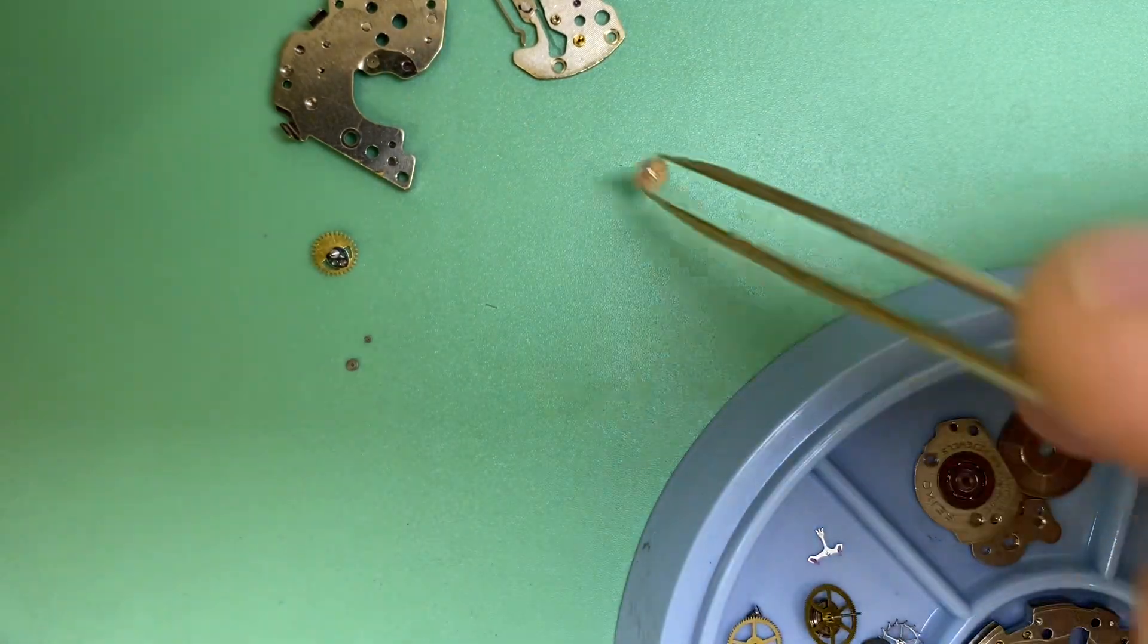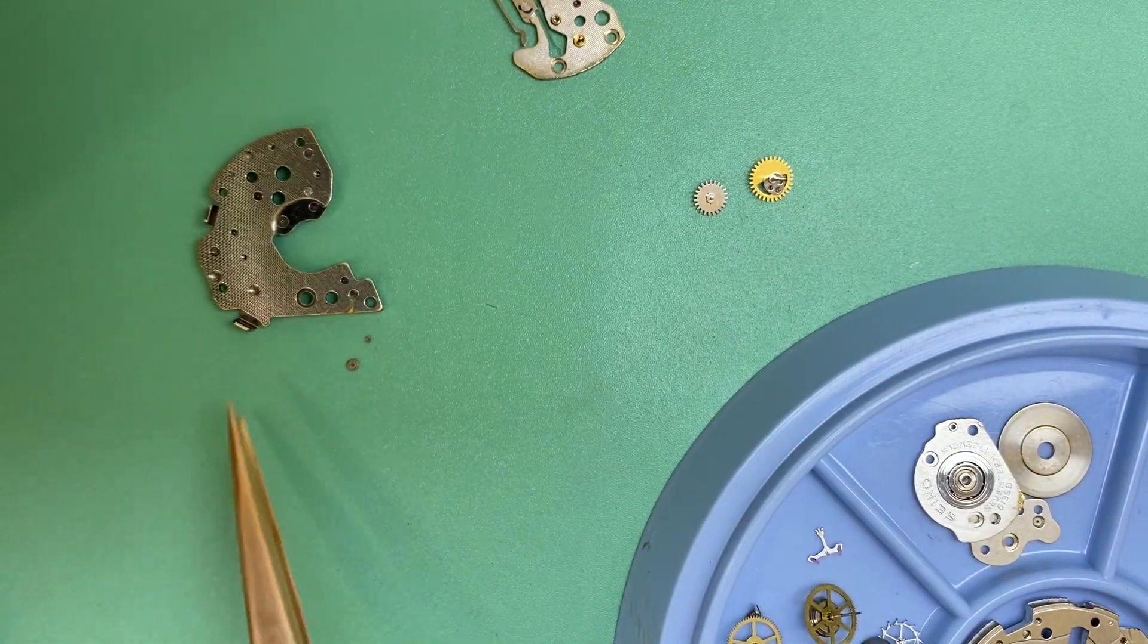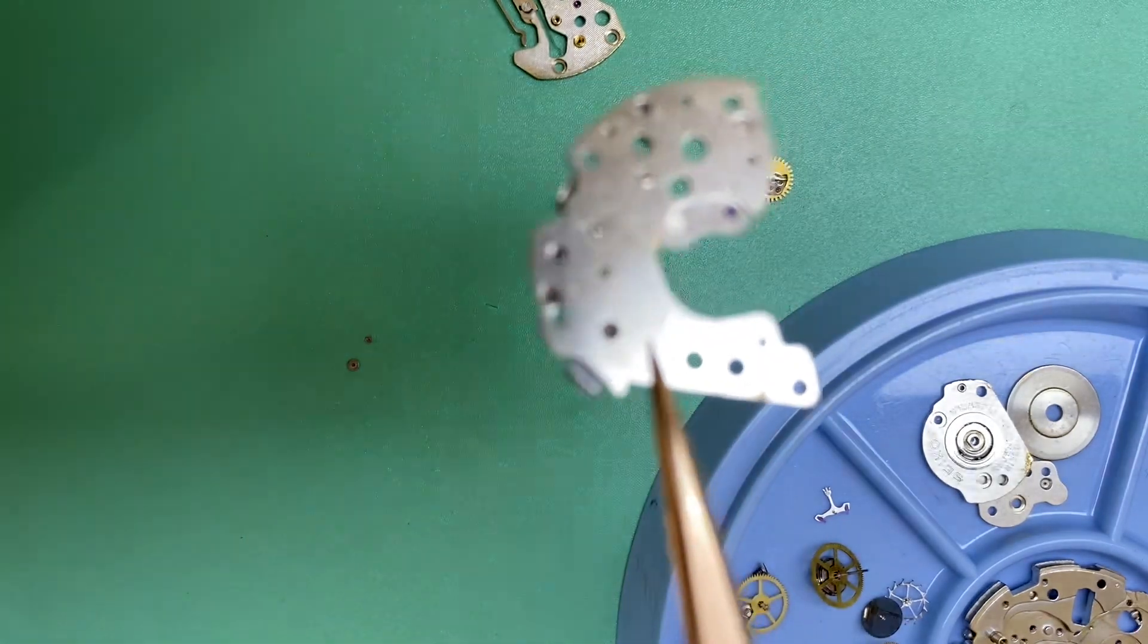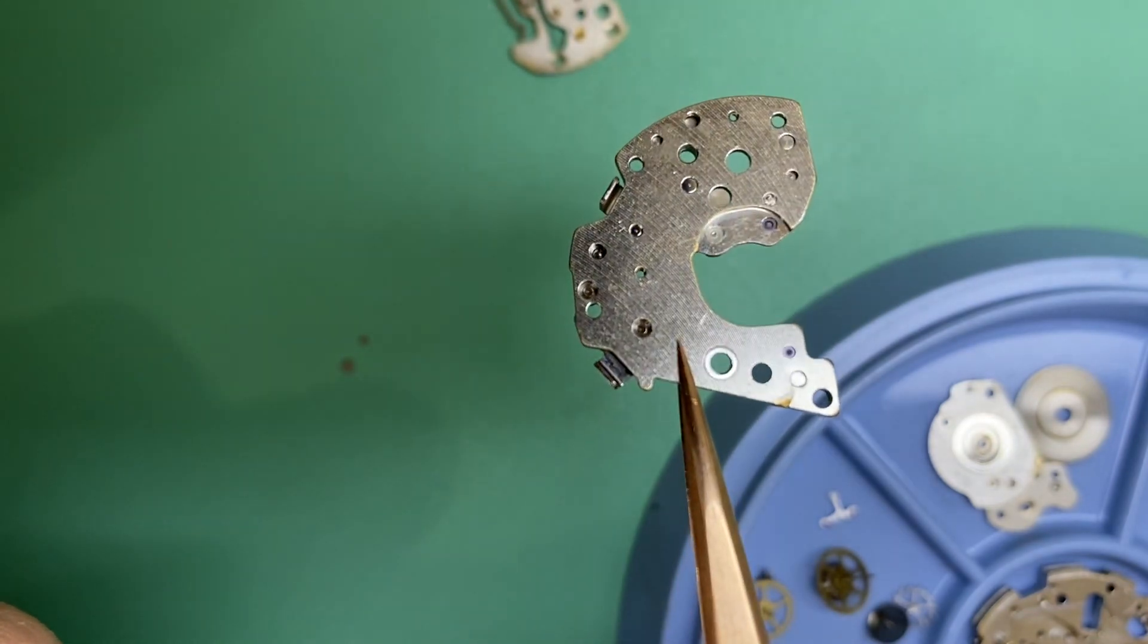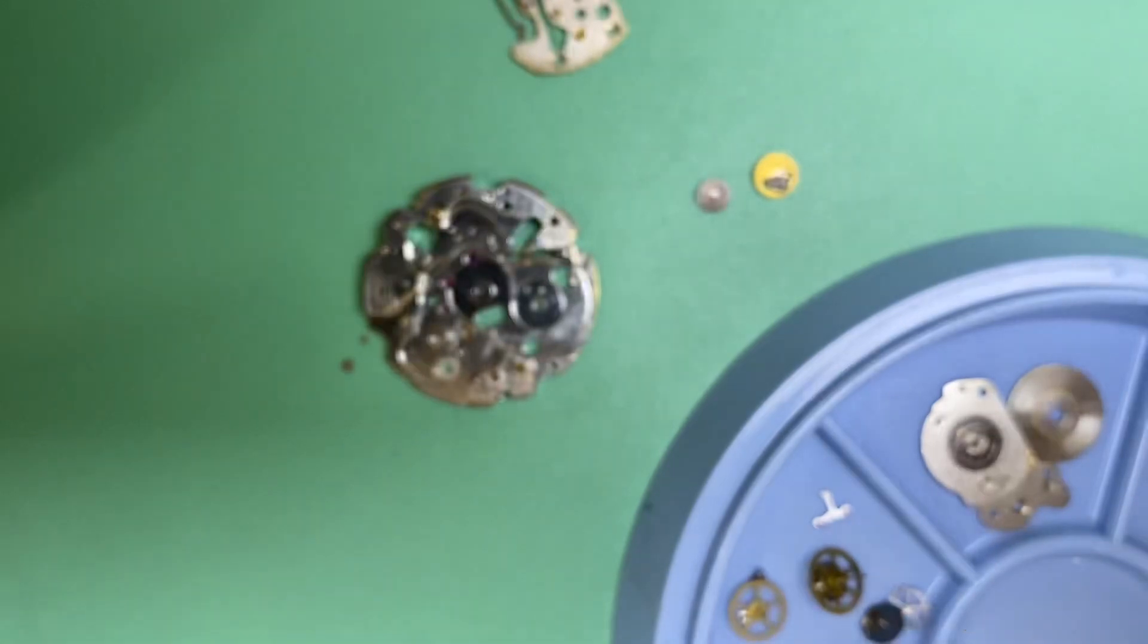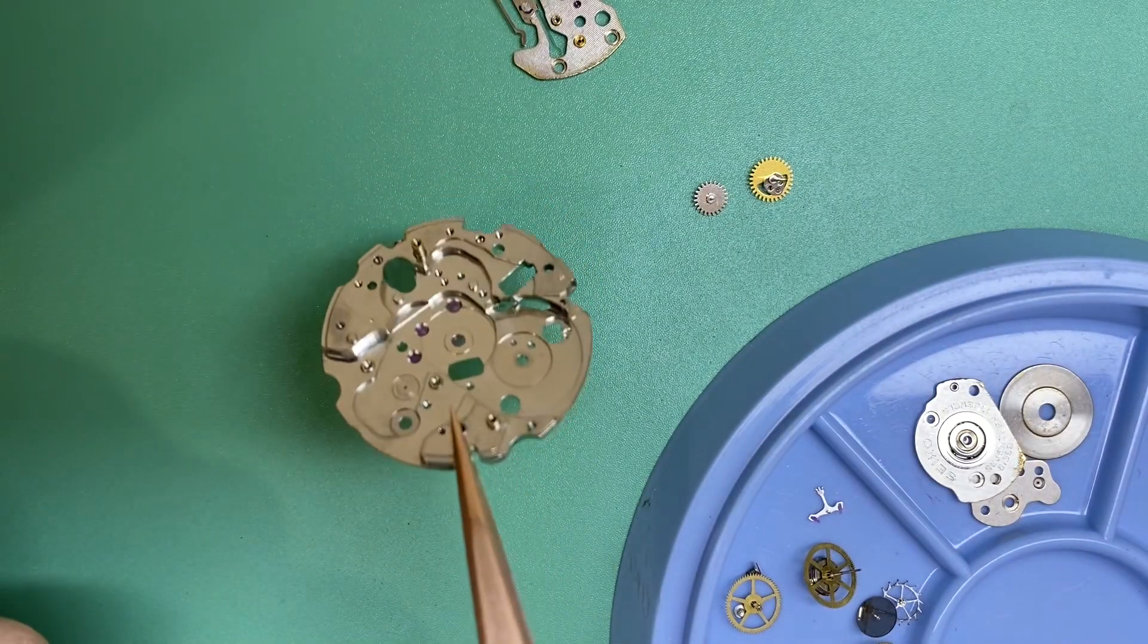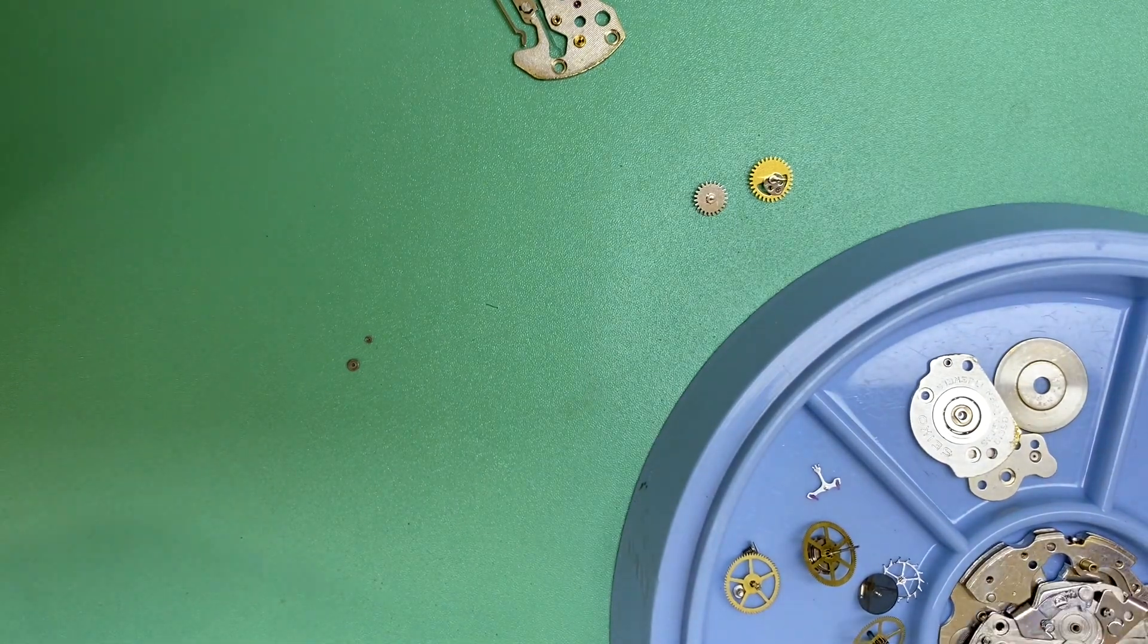You guys obviously already know about the barrel wear points. We can see that this one here is pretty bad and it's going to need to be jeweled. We can see it's cut away and the same goes for the main plate as well. So we can get onto that, and you can also look at that process on my previous 6139, 6138 barrel jeweling videos.